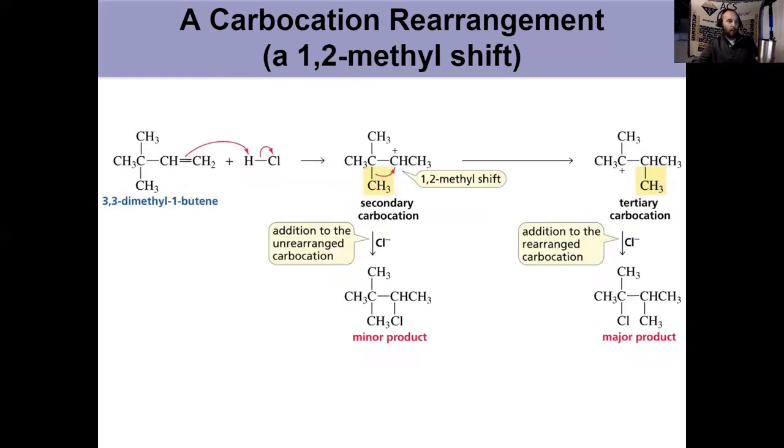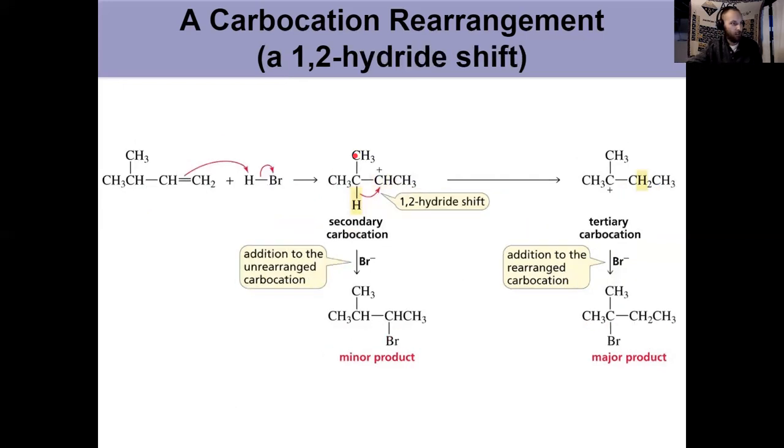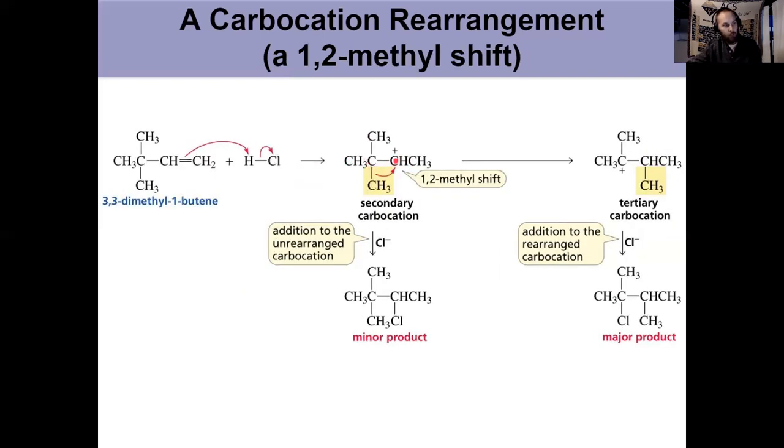We can also do it by a 1,2 methyl shift. Same situation. Add my electrophilic hydrogen, form my carbocation on secondary carbon. Now, if there were a hydride here, that would shift first. It's easier to do a hydride shift than a methyl shift. But in this situation, my methyl group moves over and forms a tertiary carbocation. And that's how I get my major product. Again, because there's no hydrogens to move over. Like back here, notice I didn't move a methyl. There was a hydrogen, so I did the hydride. But if there's a methyl group and it can go to a tertiary carbon, it'll move a whole methyl group over there to go from a secondary to a tertiary carbocation.